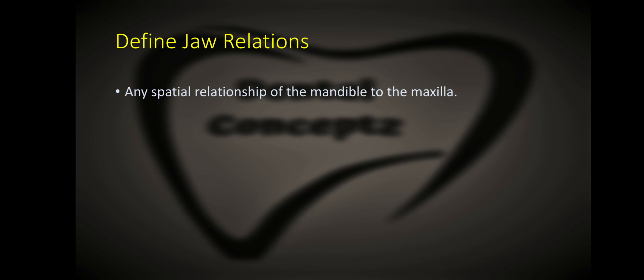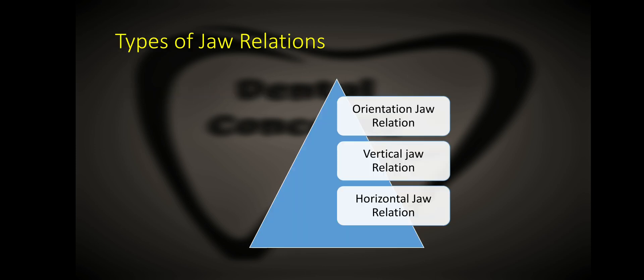What is jaw relation? Jaw relation is any spatial relationship of the mandible to the maxilla. What are the different types of jaw relations recorded in a complete denture patient? We record three different types of jaw relations: orientation jaw relation, vertical jaw relation, and horizontal jaw relation. Horizontal jaw relation is of two types: centric jaw relation and eccentric jaw relation.